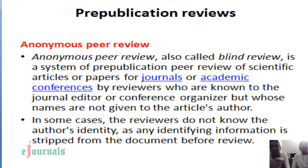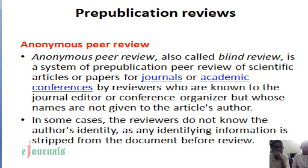In single blind review, the editor and the author may know who is going to review. In anonymous peer review, also called blind review, it is a system of pre-publication peer review for scientific articles or papers for journals or academic conferences, so that the review will be very objective with no element of subjectivity. In some cases the reviewers do not know the author's identity, as any identifying information is stripped from the document before review. That is why authors are expected to submit their identities in a separate sheet so that it can be removed when sent for review.